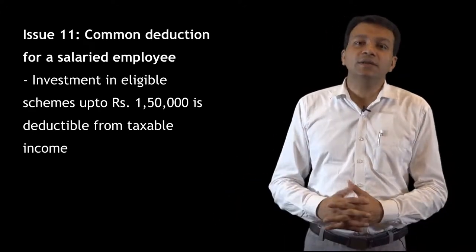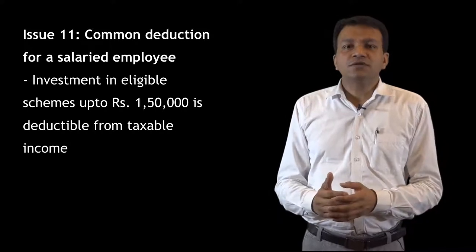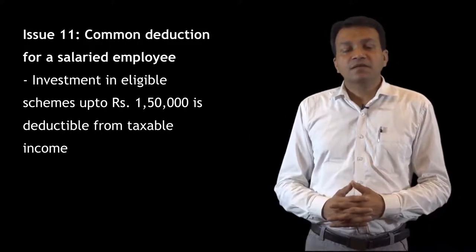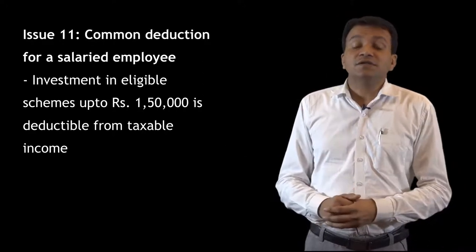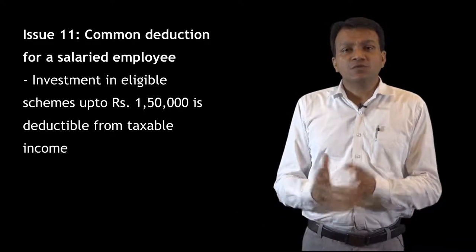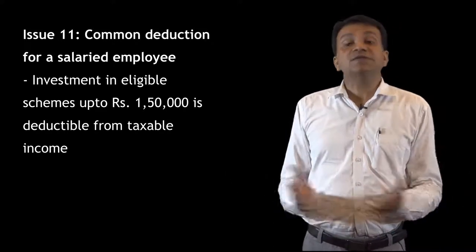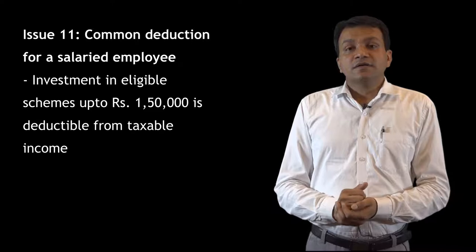We also have deductions under Section 80C, which is a common deduction for every salaried employee. Up to Rs 1,50,000 we can invest in Sukanya Samriddhi Account, tuition fees of any two children, contribution towards recognized provident funds, life insurance premium policies, etc. It is better to invest Rs 1,50,000 in these schemes to save tax. These are some common tax planning issues necessary for a salaried employee.